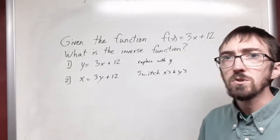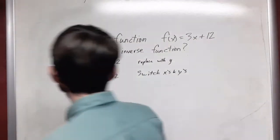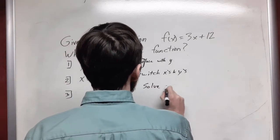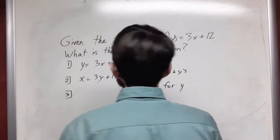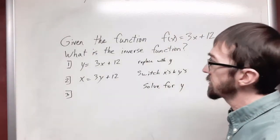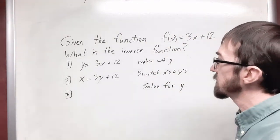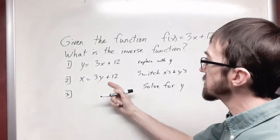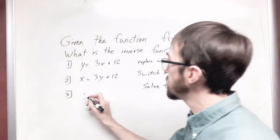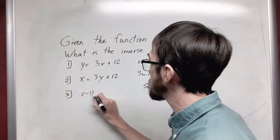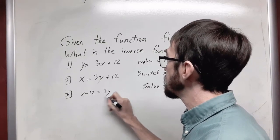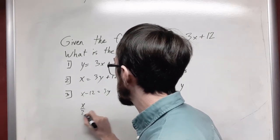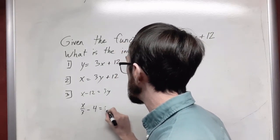The third step is we're going to solve this for y again. Solving for y, you're just going to use all of your typical problem-solving techniques. We have the 12 that we're going to move to the other side. So, since this is positive, we're going to subtract 12 from both sides. So, we'll get x minus 12, and that's equal to 3y, and then divide both sides by 3. So, we're going to end up with x thirds minus 4 equals y.